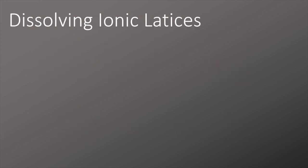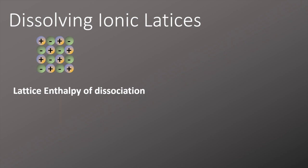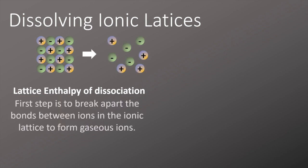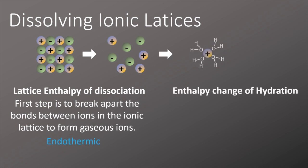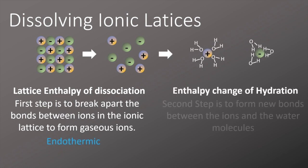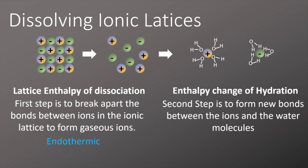When we think about dissolving ionic lattices, we can break it down into two steps. In the first step, the lattice enthalpy of dissociation, we break apart the bonds between the ions in the ionic lattice to form gaseous ions — this is an endothermic process. In the second step, the enthalpy change of hydration is where we form new bonds between the ions and the water molecules, and this is an exothermic process.